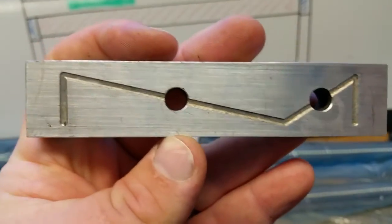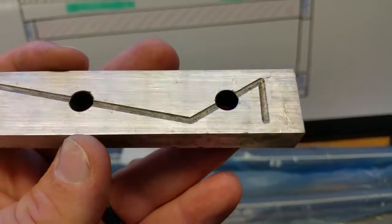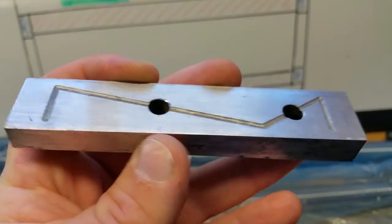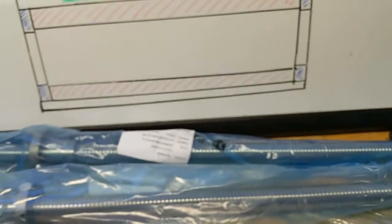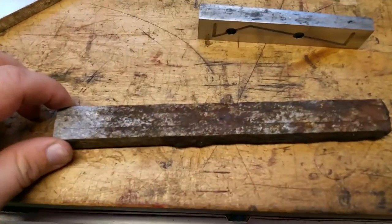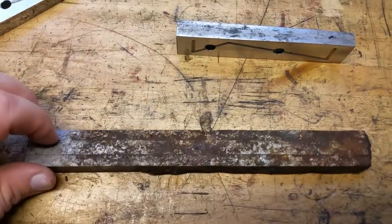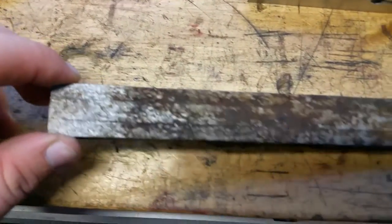So, this is a 5-inch gib from the saddle. You can see there's an oil groove cut into it. Let me refocus. This is actually the X-gib, or one of them.